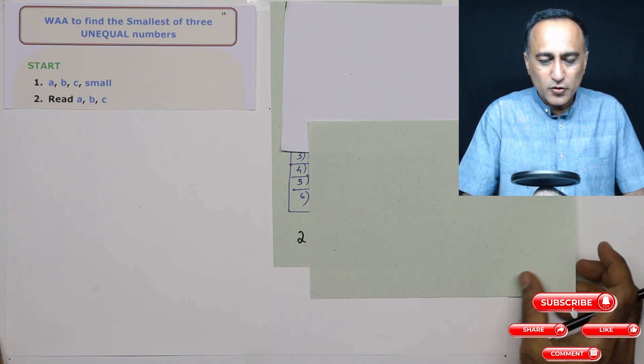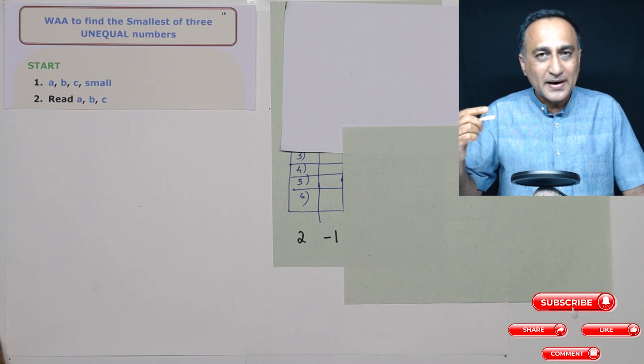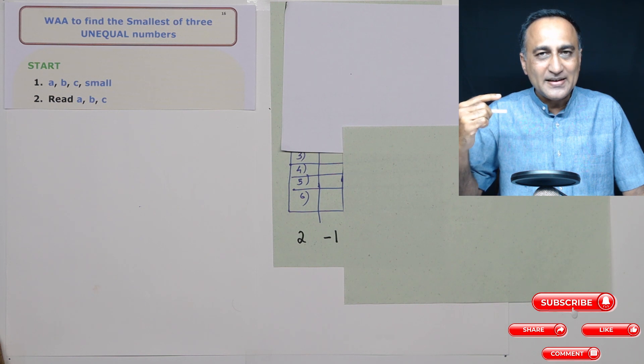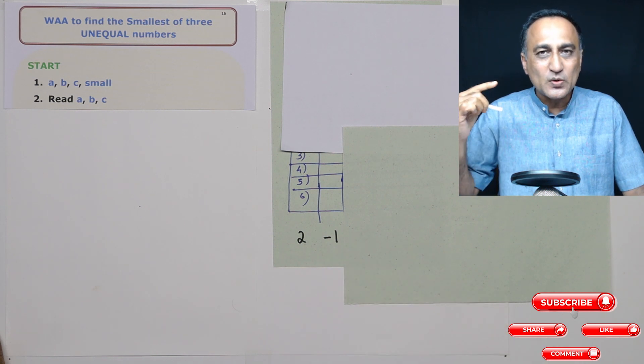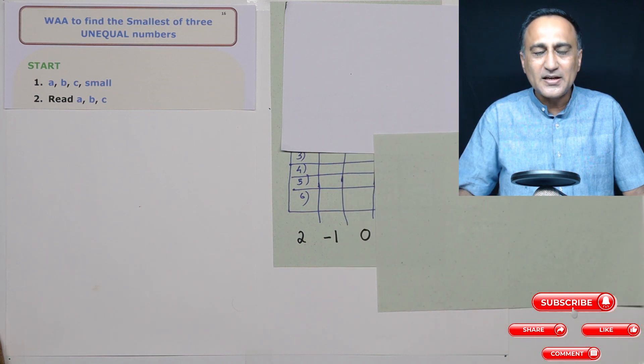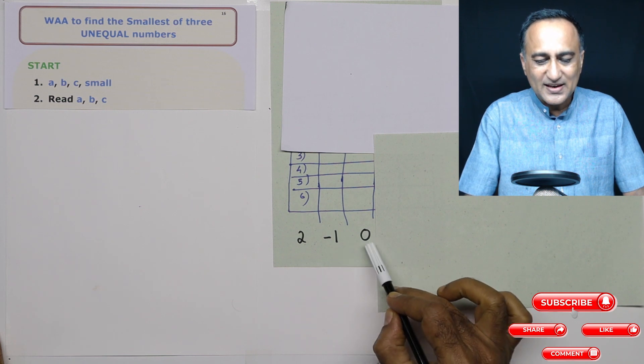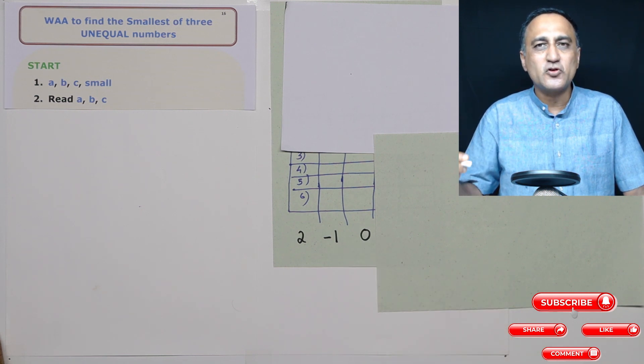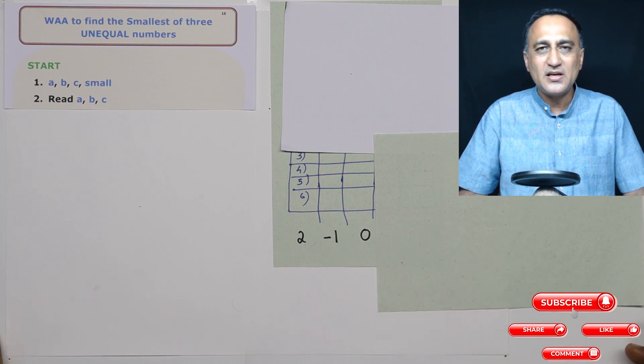Now let's say I show you one other number, minus 1. What your mind does is the small in your mind is now replaced with minus 1. So 2 is replaced with minus 1, and minus 1 becomes the new small. Now I show you the third number, 0. My mind's small decision does not change because minus 1 is still less than 0. So my small continues to remain minus 1. If you ask me which is the smallest of these three numbers without hesitation, I will tell you that minus 1 is the smallest.